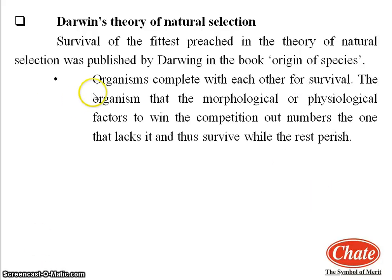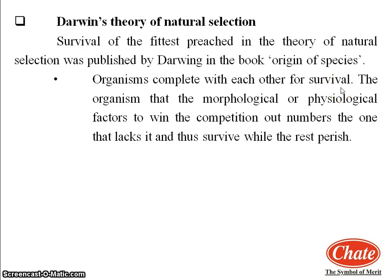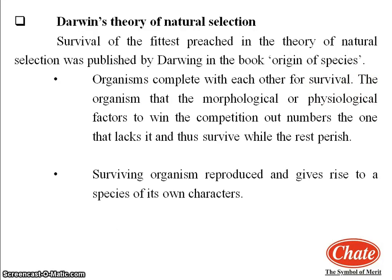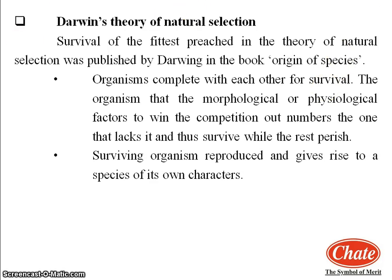According to Darwin, all organisms reproduce prolifically, meaning causing abundant growth. These organisms compete with each other, and only those organisms which show modification sustain. Natural selection also plays an important role, because nature selects only those organisms which are fit to survive and the rest perish. These sustained and selected organisms reproduce and give rise to new species with their own specific characteristics. This theory was widely accepted for a long duration; however, it had some objections.